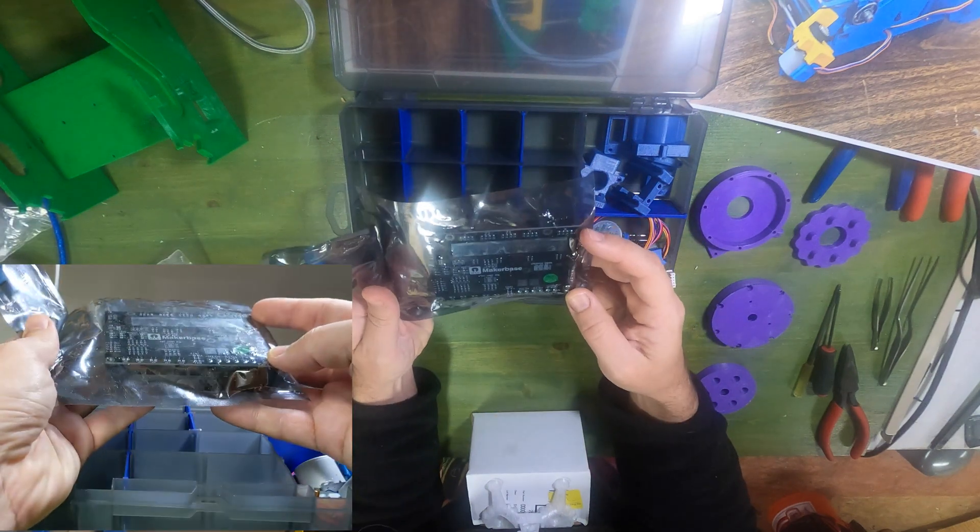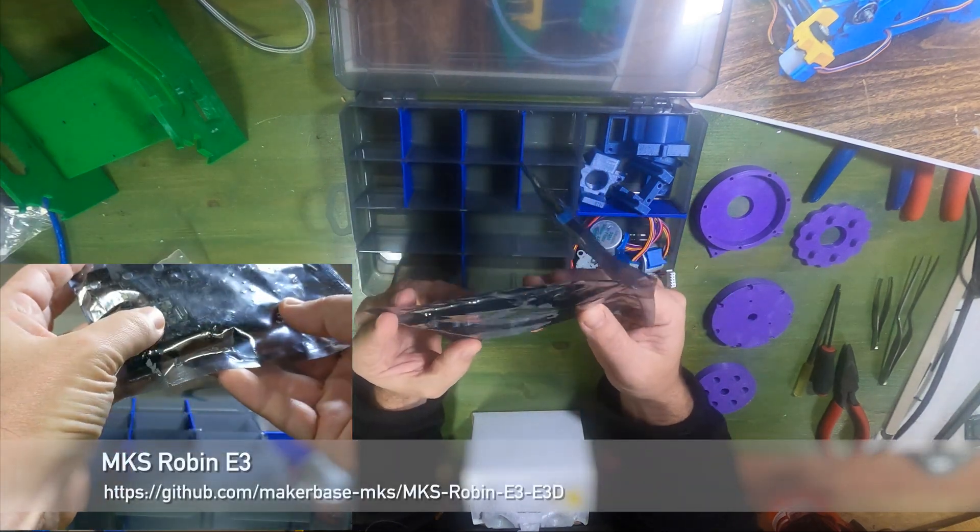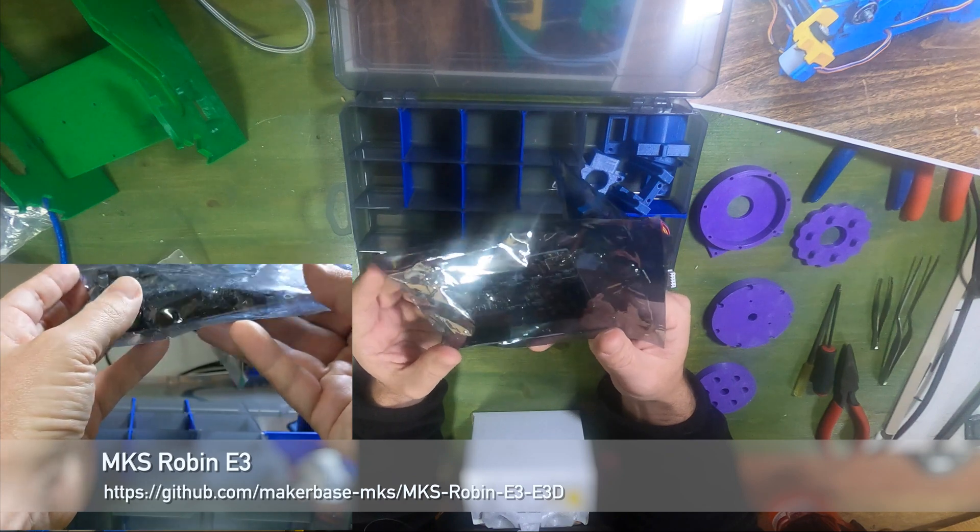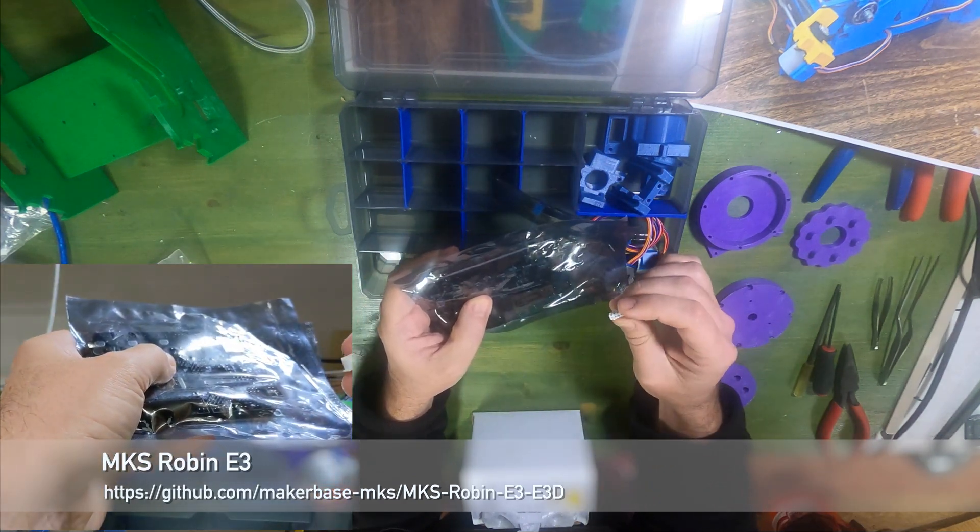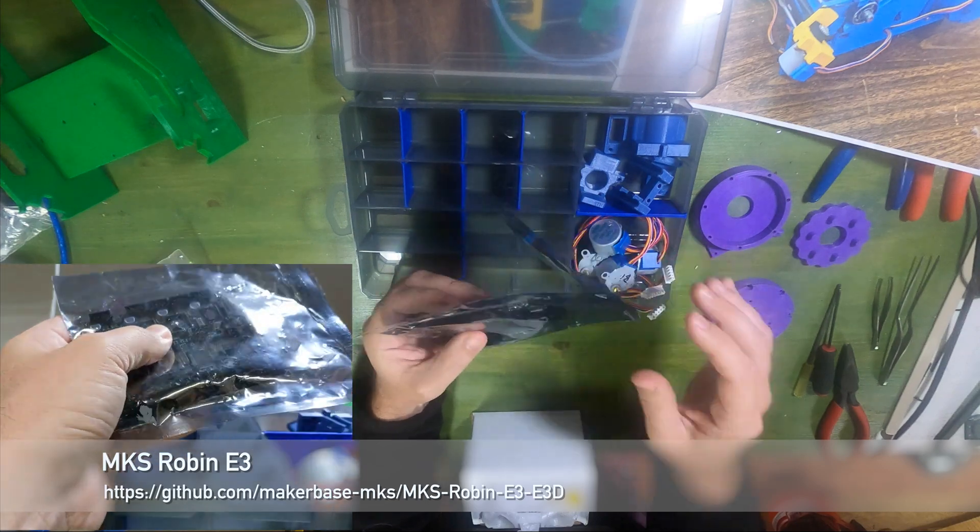The electronics are the MKS Robin E3. Nice choice that includes modern TMC 2209 steppers on board and sensorless homing that this machine relies on. You'll notice there's no end stops.